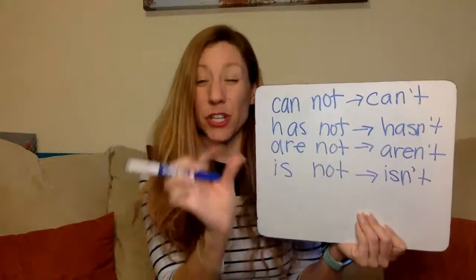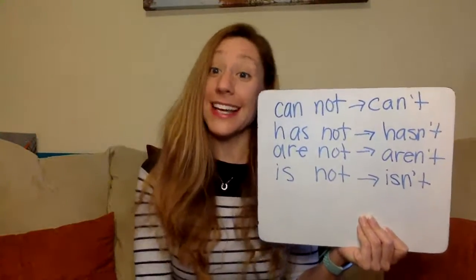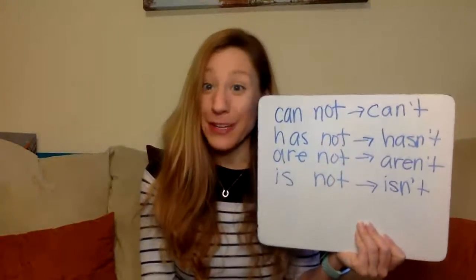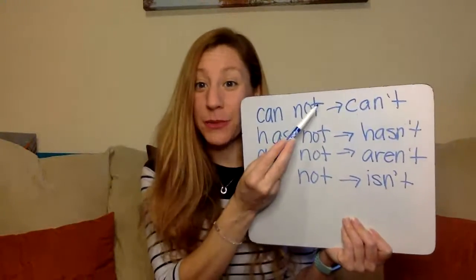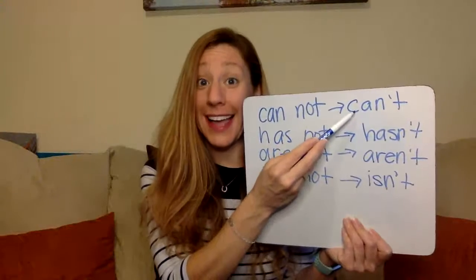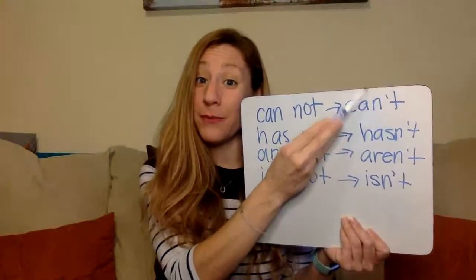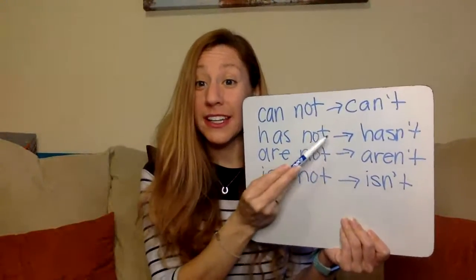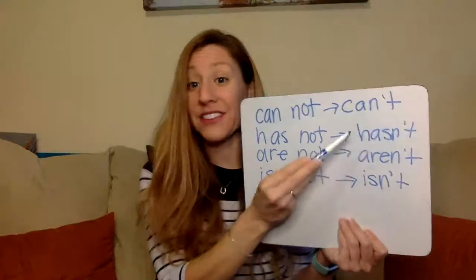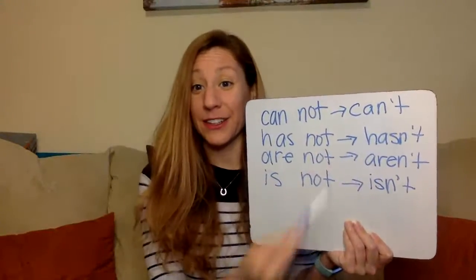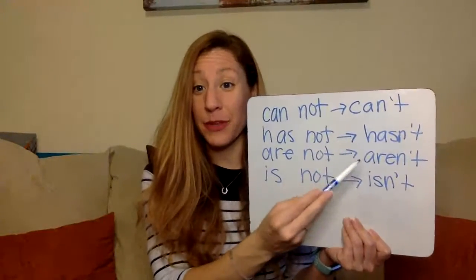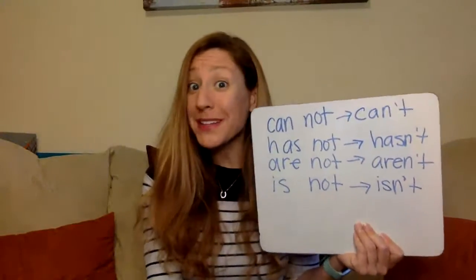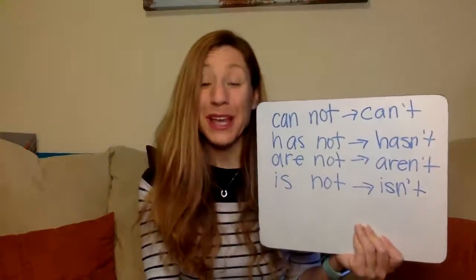We took out the space and sometimes some letters — not always. For can't, we took out an N and the O is replaced by the apostrophe. For hasn't, we haven't taken out any letters. Same with aren't and isn't. So it depends on the word.